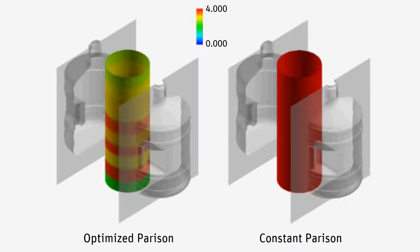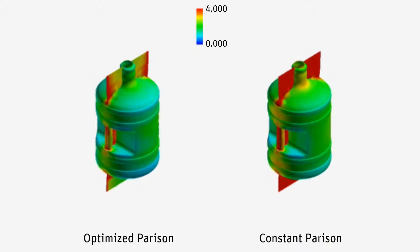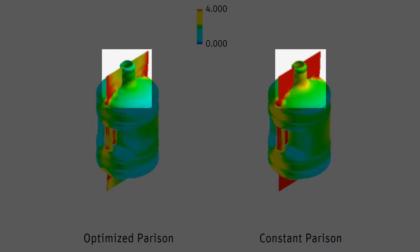I can then validate the optimized parison by running the two simulations. As you can see, the optimized case has a substantial reduction of material in the flash, that is, the plastic that lies outside the mold that will be trimmed and then recycled.